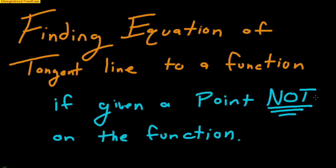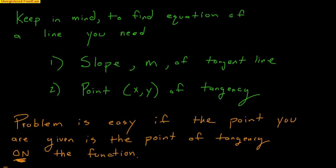This video is about finding the equation of a tangent line to a function when given a point not on the function. This is a calculus problem where we use derivatives because we're dealing with tangent lines. The key difference here is that the point we're given is not on the function.